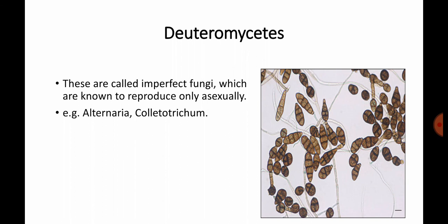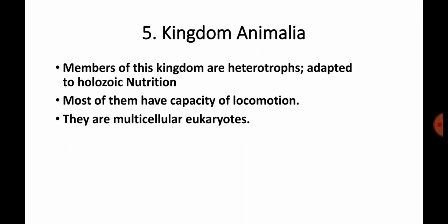Moving on to the last kingdom — Kingdom Animalia. R.H. Whittaker gave five kingdoms. We have learned about Kingdom Monera, Kingdom Protista, Kingdom Plantae, and Kingdom Fungi. Kingdom Animalia includes all heterotrophs with the capacity for locomotion — they move from one place to another and are multicellular eukaryotes. A detailed video on Kingdom Animalia will be prepared separately. Thank you — please like, subscribe, and comment.